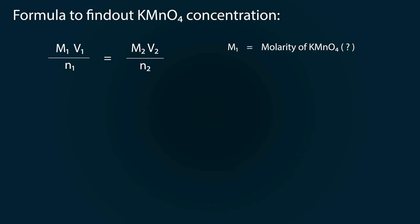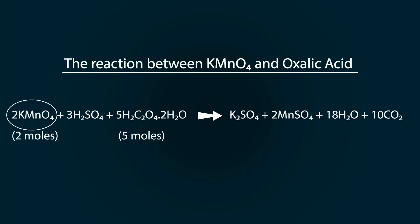Where M1 is the molarity of KMNO4 which we have to find out. V1 is the volume of KMNO4 used which is 80 milliliters. N1 is the number of moles of KMNO4 used which is 2 moles, because we got this from the previous reaction.